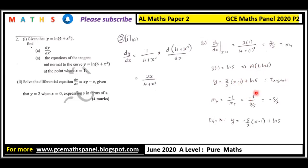Then to get the equation or the gradient of the normal, the gradient of the normal, since two lines are perpendicular if the product of their gradient is negative 1, so the gradient of the normal will be minus 1 over the gradient of the tangent, giving us −5/2. Therefore the equation of the normal will be equal to −5/2(x − x₁), that is x − 1 + ln 5. Please don't forget to subscribe and watch the next video which is on questions 3 and 4.